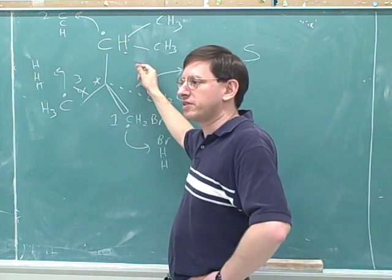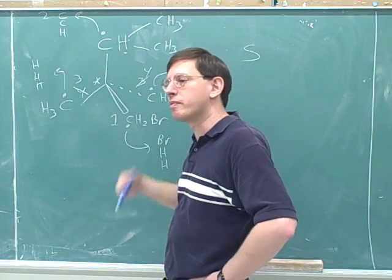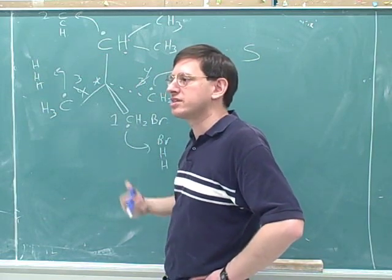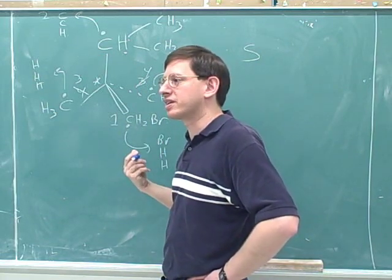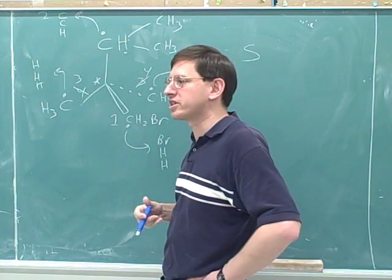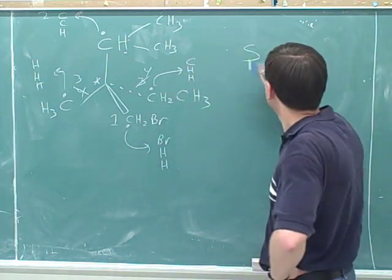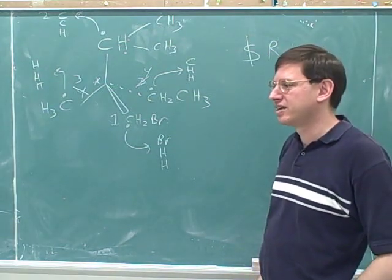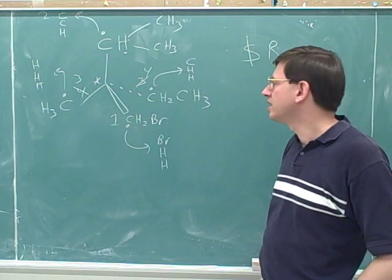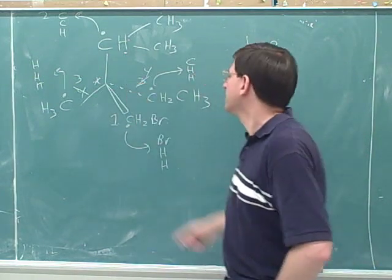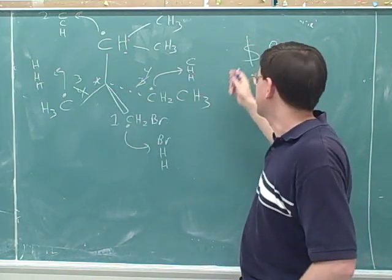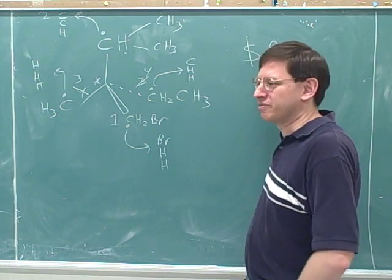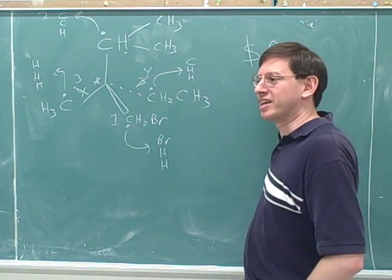So what was the configuration before the single swap? Well, we learned that from the single swap rule. A single swap always gives you the opposite configuration. A single swap always gives you the opposite configuration. So we should cross this out and put in the R. So you can do a single swap and figure out what it is and then reverse that. You make a single swap. You write down the letter for the numbers. And then you cross out that letter and write the other letter. There's absolutely no thinking involved. And with practice, you can do this in 10 seconds.